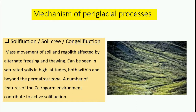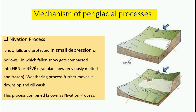Solifluction is a very important mechanism when we talk about periglacial processes. The process of debris movement in periglacial regions has been variously defined. J.G. Andersson proposed the term 'solifluction' for the slow movement of debris — as seen in the picture, this is the consequence of slow soil movement. In short, it is the mass movement of soil and regolith affected by alternate freezing and thawing, seen in saturated soils at high latitudes.